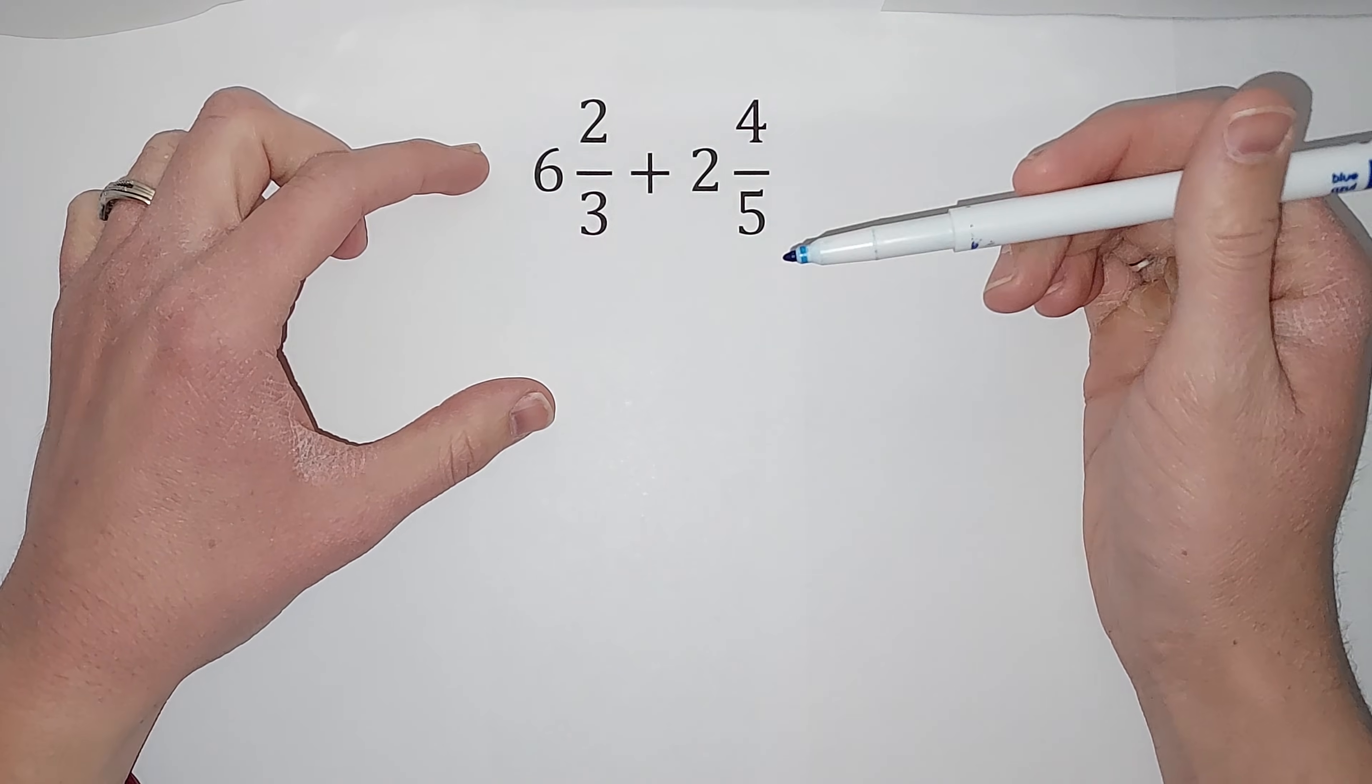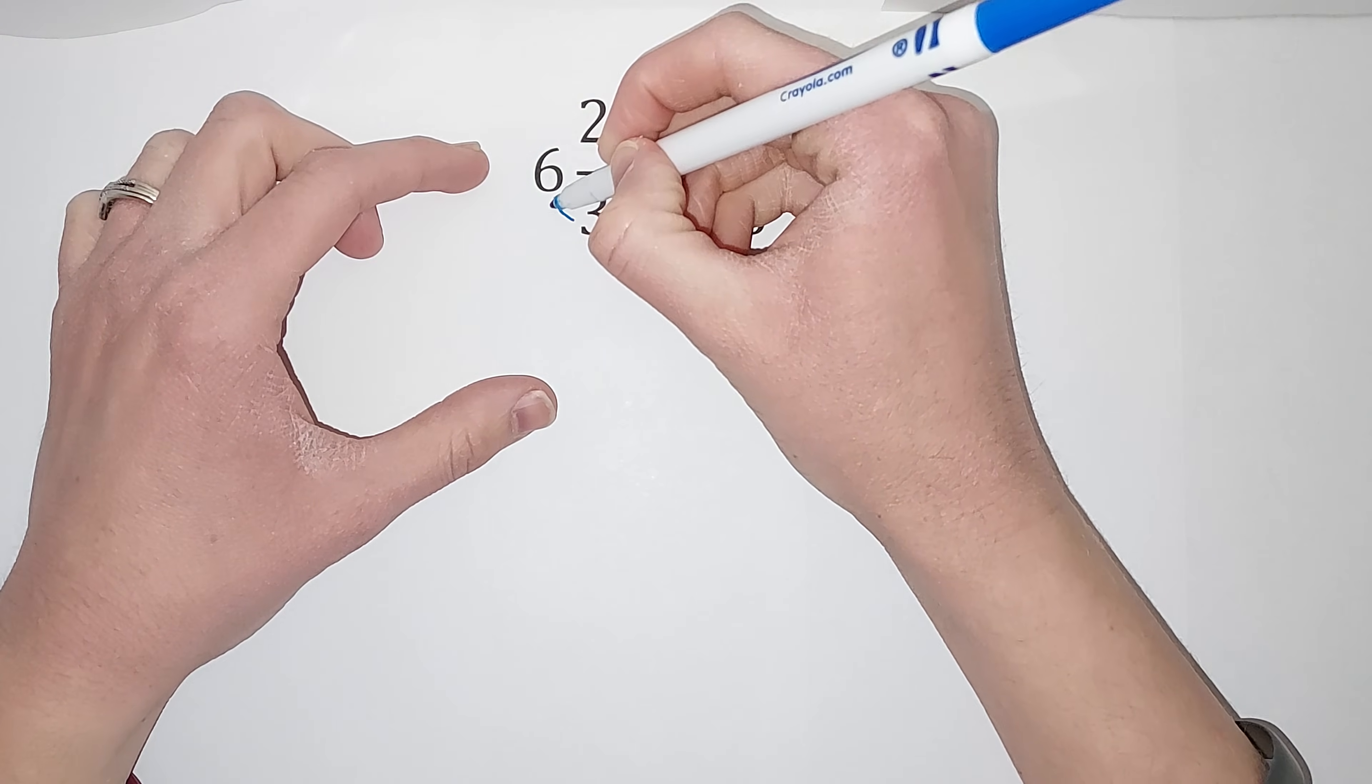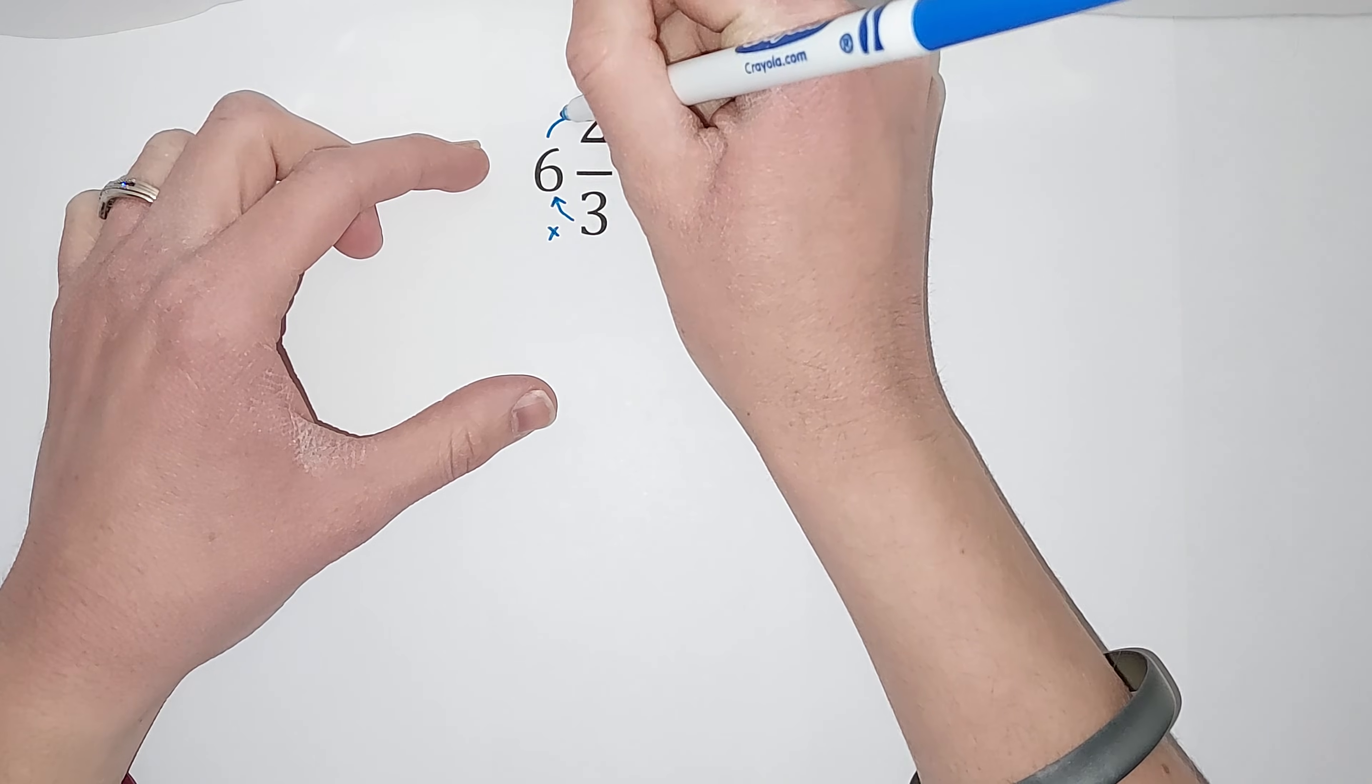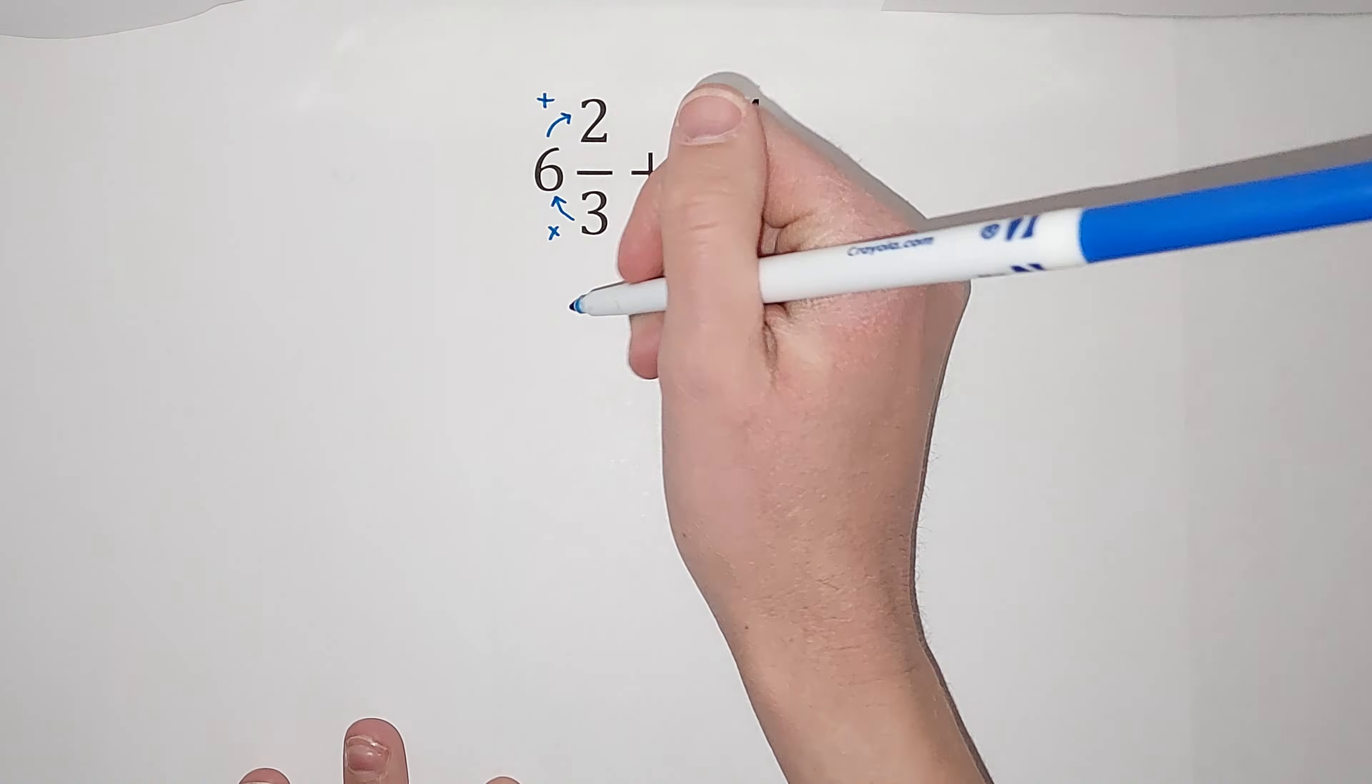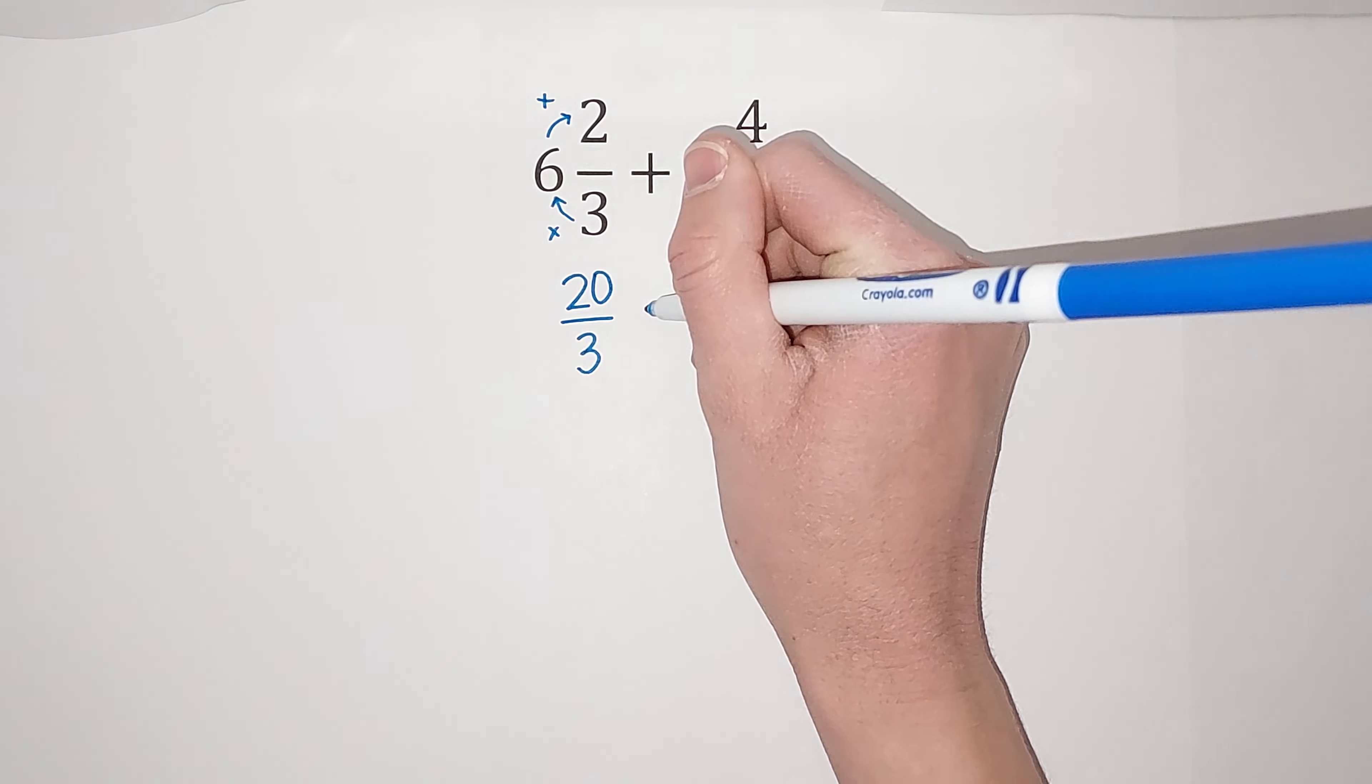So this is pretty easy to do. If you need some more examples, I'll link some in the corner, but I'm also going to do it here. We take our denominator and multiply it by the big number. So three times six gives me 18, and then we add two. So we get 20. So I've got 20, and then my denominator is still three.